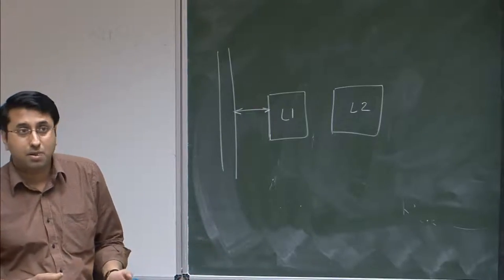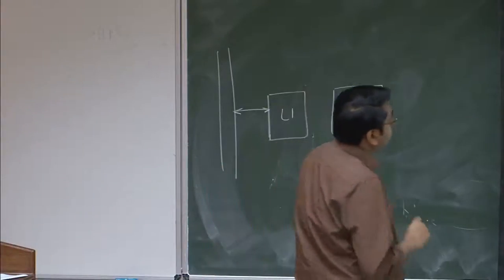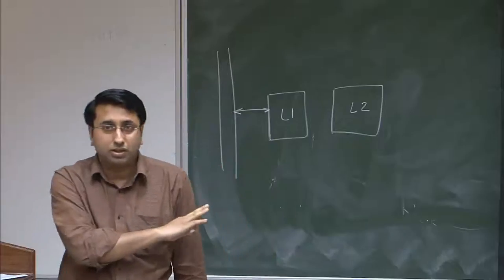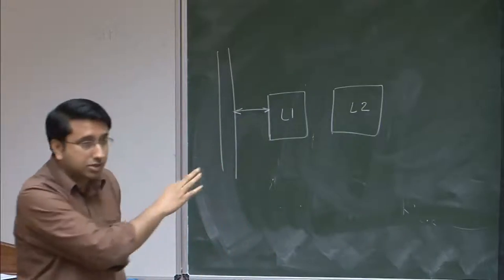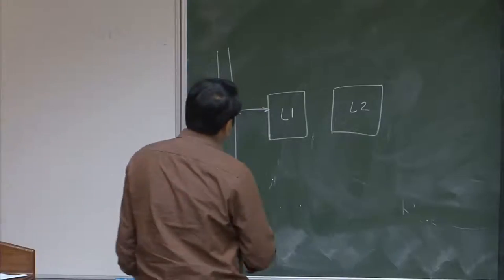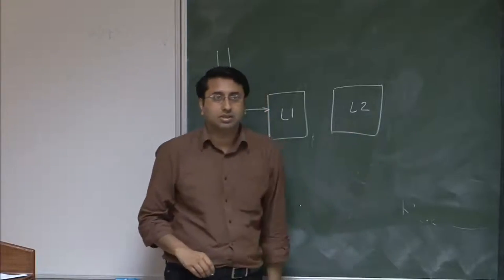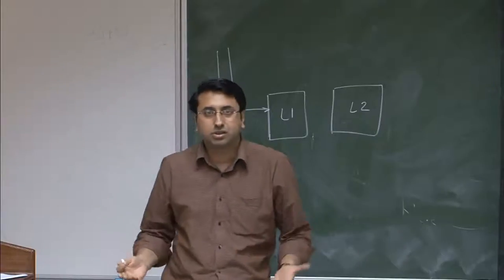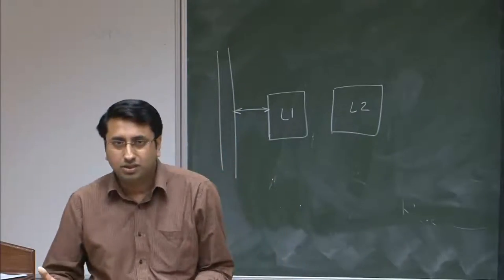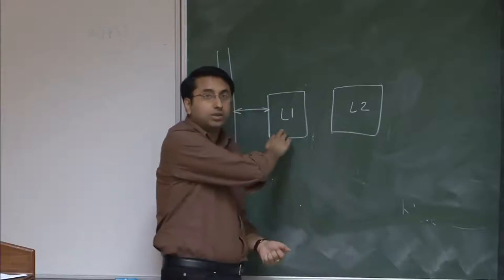So what will happen when you evict such a block? Immediately the processor will access the block, have a cache miss, and bring the block back into L2 and L1. And this cycle will keep on repeating — the processor accesses from L1, L2 thinks it's a cold block, it becomes LRU eventually, and then gets evicted again. Ultimately, because of the back invalidations, you will see extra cache misses. These are called back invalidations or sometimes called inclusion overhead.